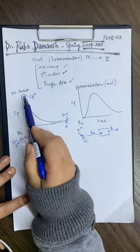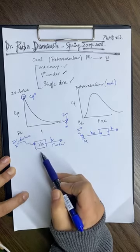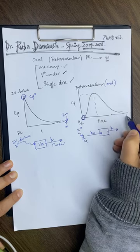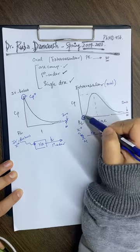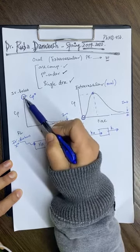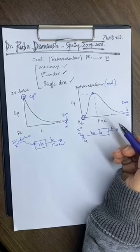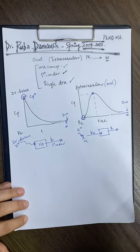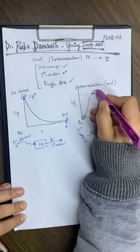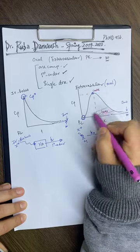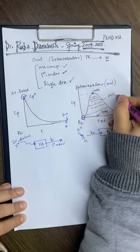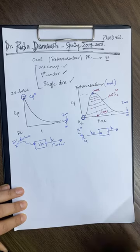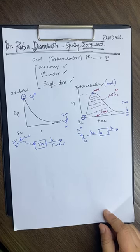With IV bolus we start with the highest amount or largest concentration because the drug enters directly. Here in extravascular, we start with zero because we have nothing at the beginning, then we reach the maximum, and at time infinity we have zero. The difference between IV bolus and extravascular is covered in your second and third slides. For extravascular we have what we call C_max or C_peak, T_max or T_peak, and area under the curve — the total AUC. These are the key parameters for oral kinetics, covered in your fourth slide.